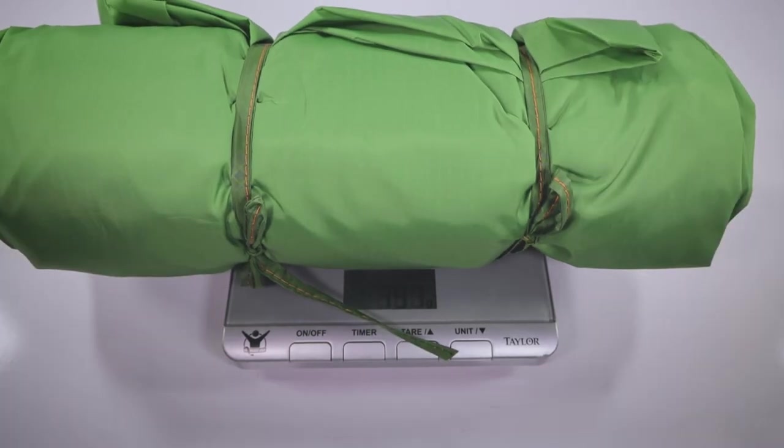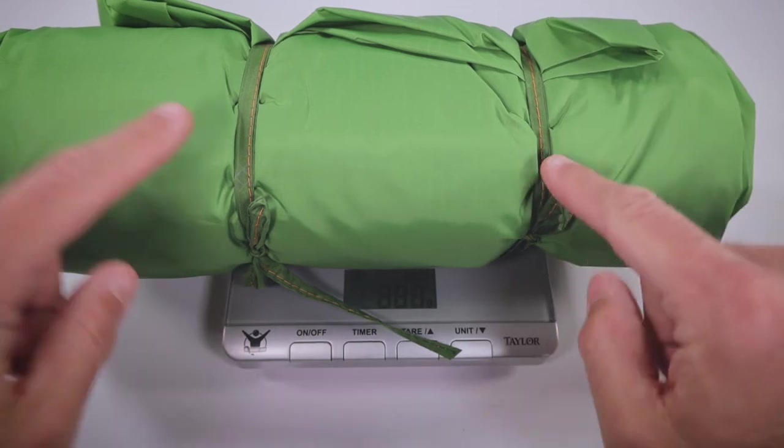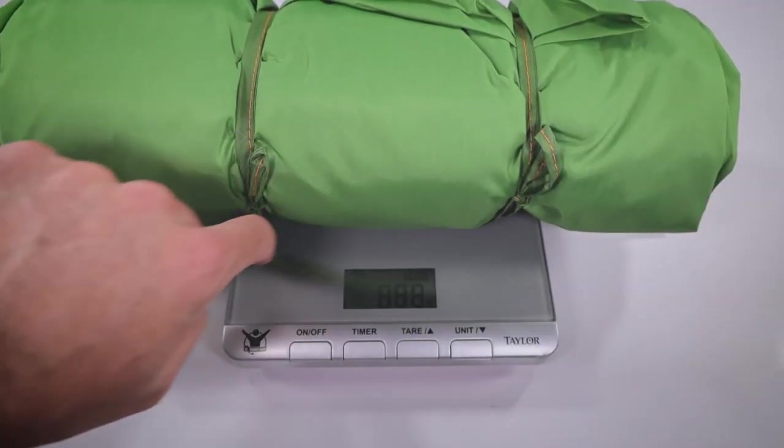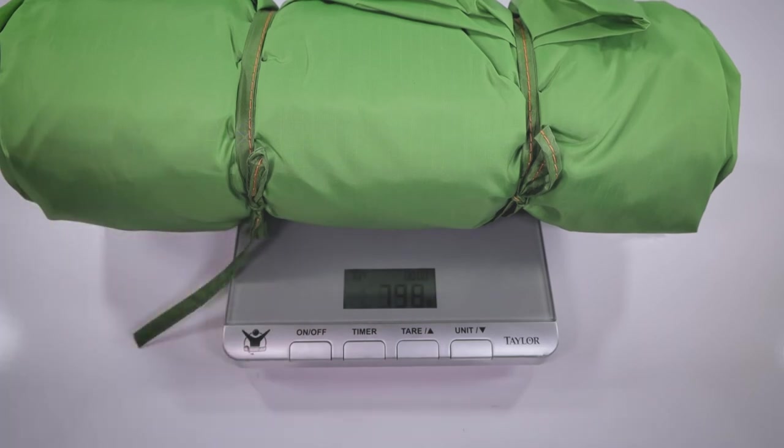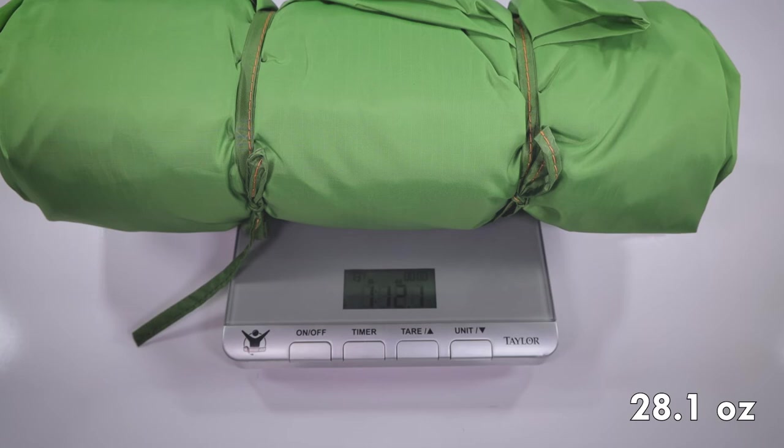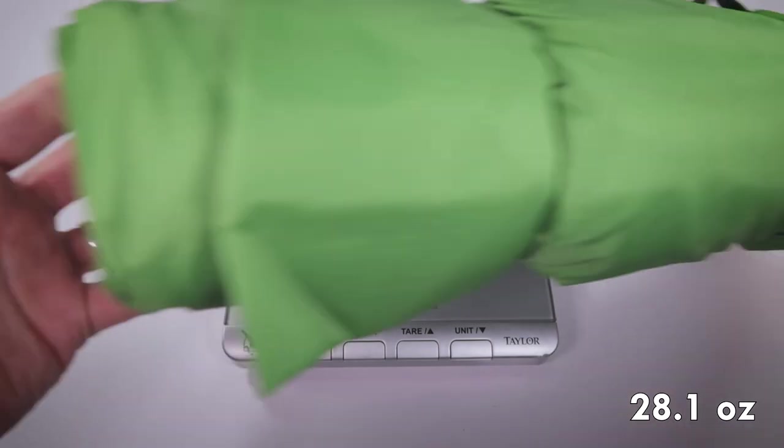Looks like we got 797 grams, so probably when we take these away it'll be spot on. I can't really tell, hopefully you guys can see that. 790 grams, and that is 798 grams. We put that into pounds, that's one pound 12.1 ounces. So pretty much right on spec. But yeah, there you go, Skyscape Trekker.